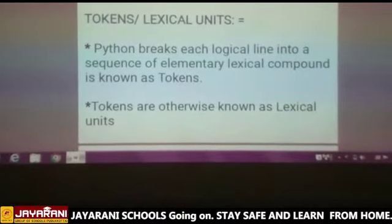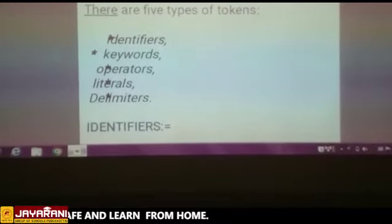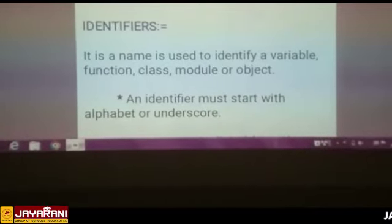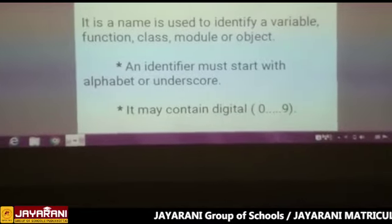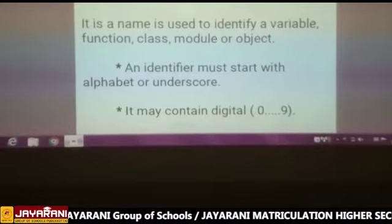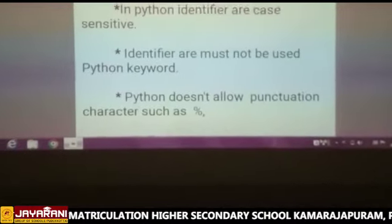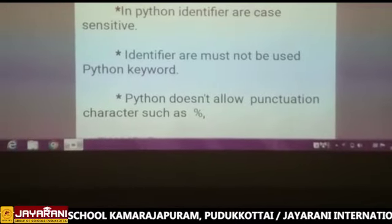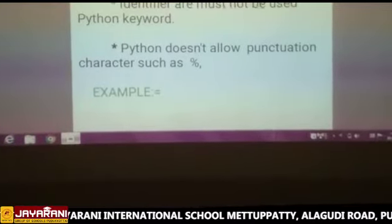What are the tokens we are using in Python? Identifiers, keywords, operators, literals, and delimiters. Identifiers are used to identify a variable, function, class, module, or object. They start with an alphabet or underscore and may also contain digits. In Python, identifiers are case sensitive, must not use any keyword, and punctuation characters are also allowed.